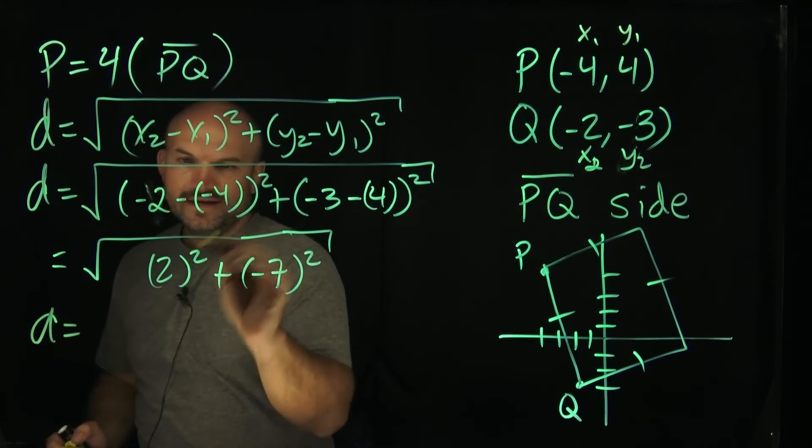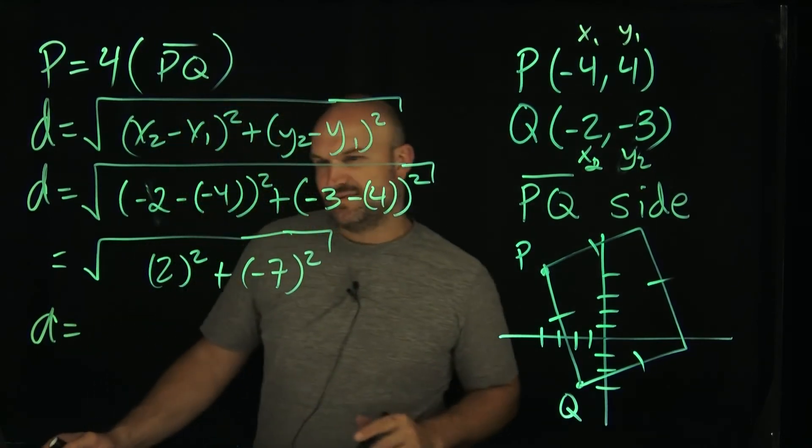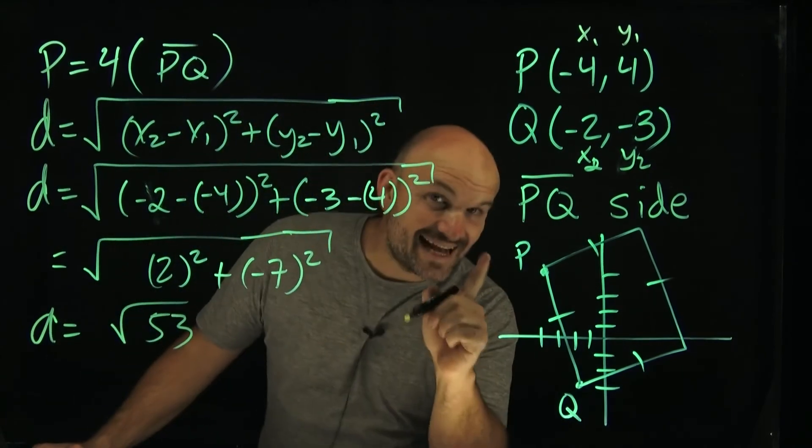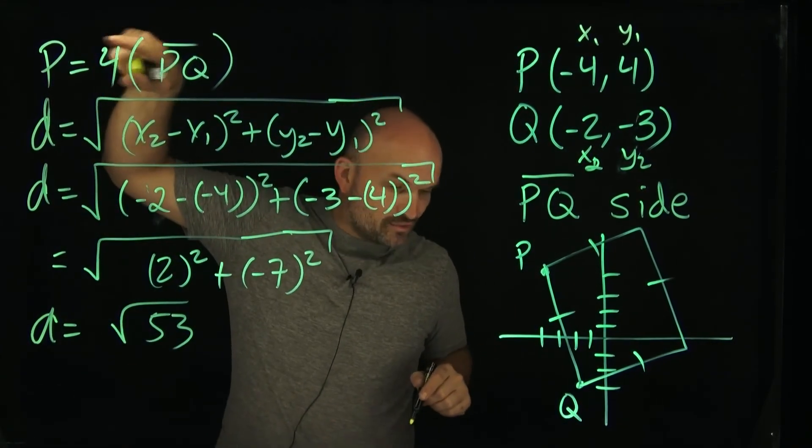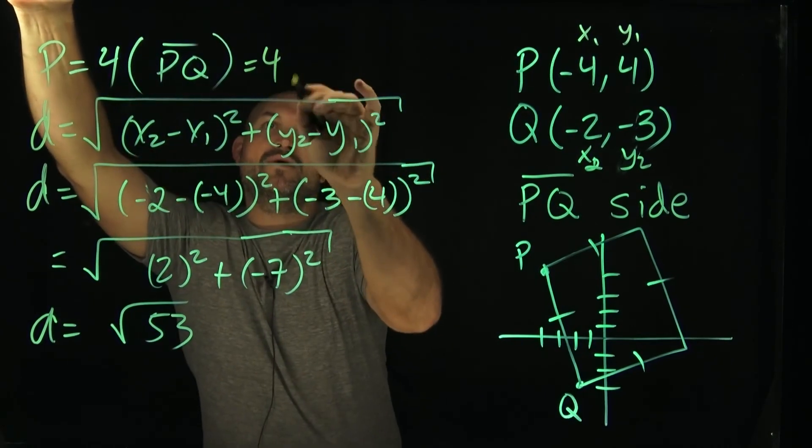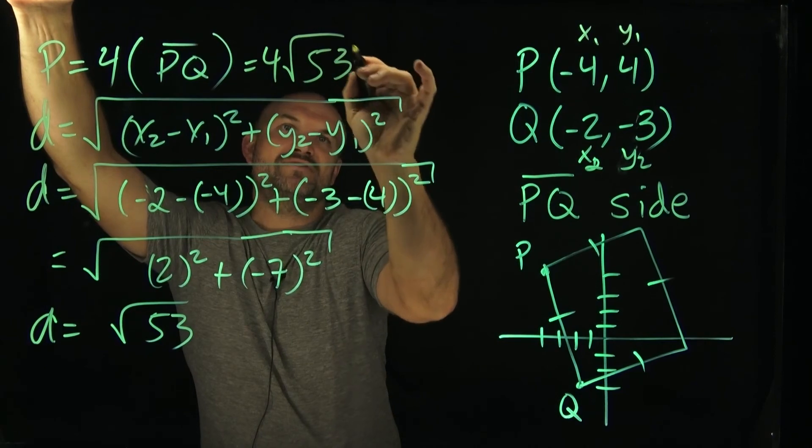So now let's fix this up. So my distance here is going to be, let's see, that's going to be 4, that's going to be 49. So that's going to be the square root of 53, but that is not your final answer. Because remember it says the perimeter here is going to be 4 times the distance of PQ. So that's going to be 4√53.